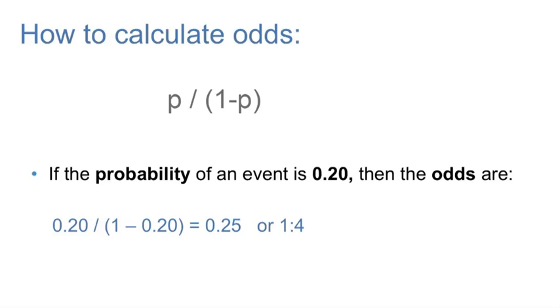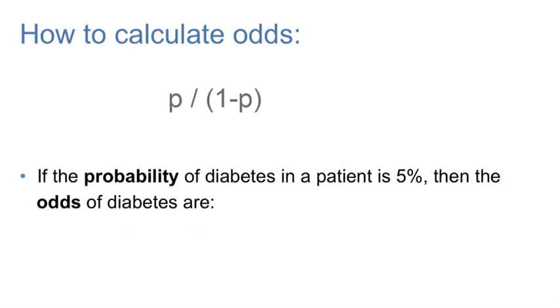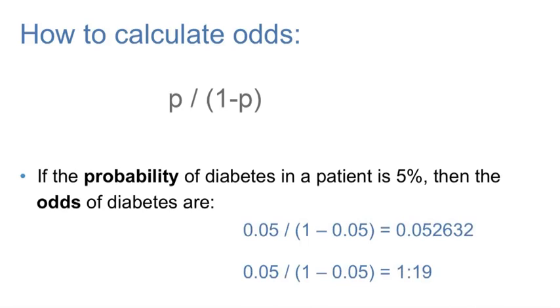Let's try another example. If the probability of diabetes in a patient is 5%, then the odds of diabetes are... Let's plug 0.05 into our formula. So you get p, or 0.05, divided by 1 minus 0.05, or 0.052632. To get a more easily understood ratio, you can then divide both sides by 0.05 to get a 1 to 19 ratio.